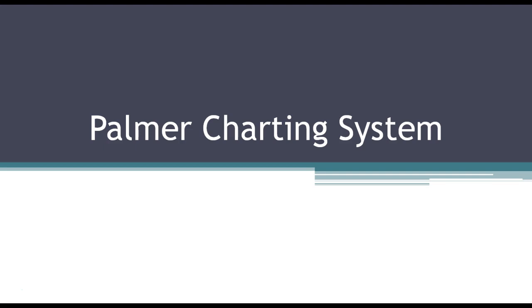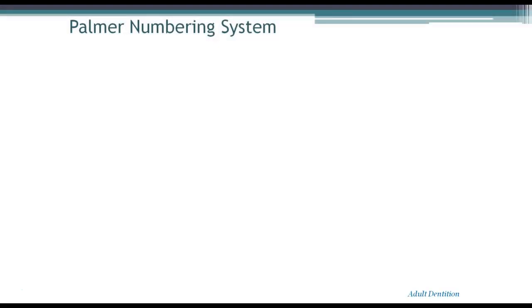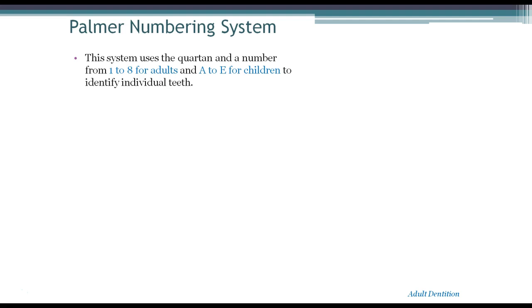This one is called the Palmer Charting System. It's a numbering system that we use, similar to the universal system, for adults and for children. The system uses the quadrants and the numbers from 1 to 8 for adults, and for children they use letters from A to E.